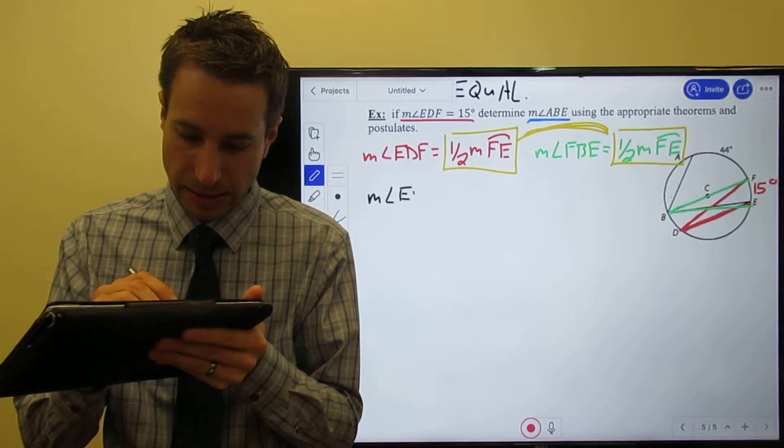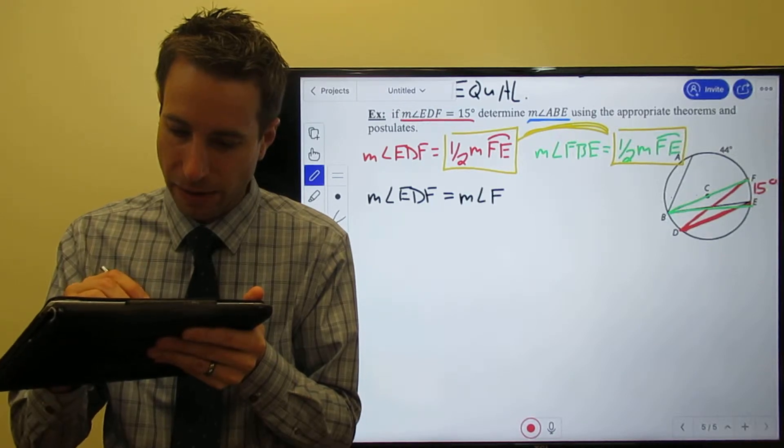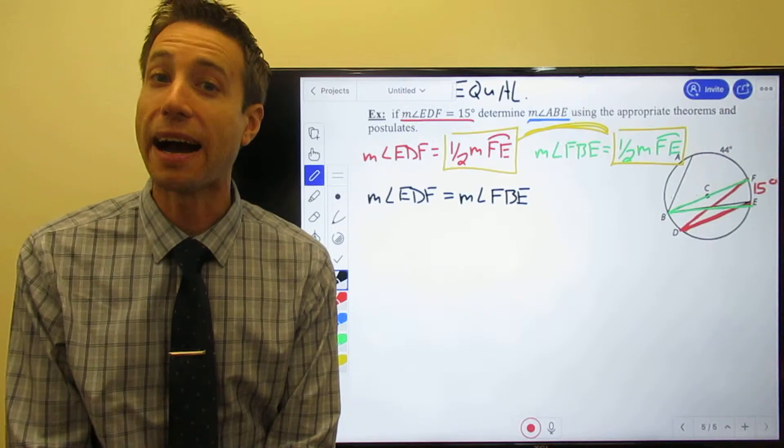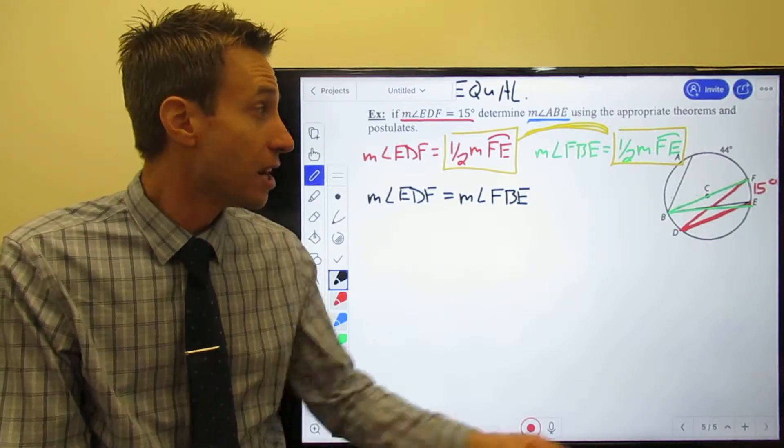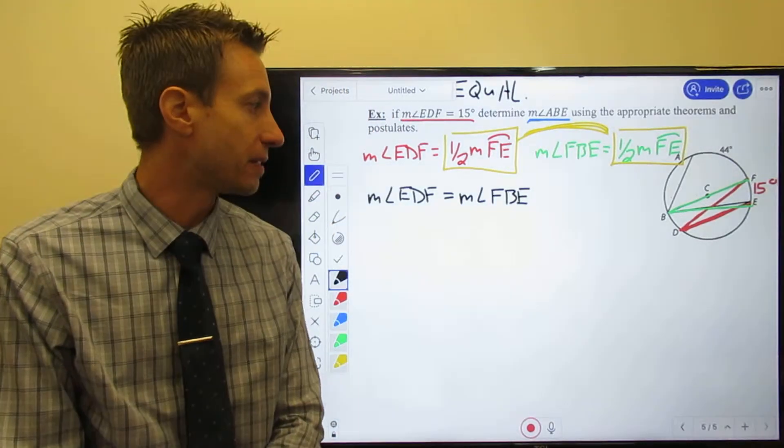The measure of angle EDF is equal to the measure of angle FBE. So all we have to do, right, is find the measure of FDE or EDF. If I know the measure of this one, then I know the measure of this one.